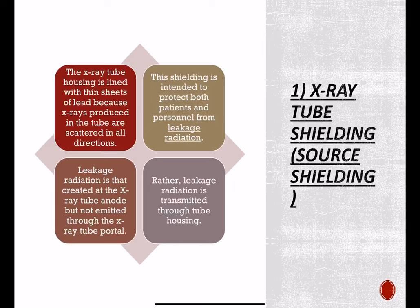The first aspect is x-ray tube shielding, meaning source shielding. The x-ray tube housing is lined with thin sheets of lead because x-rays produced in the tube are scattered in all directions. The shielding is intended to protect both patients and personnel from leakage radiation — radiation transmitted through the tube housing.